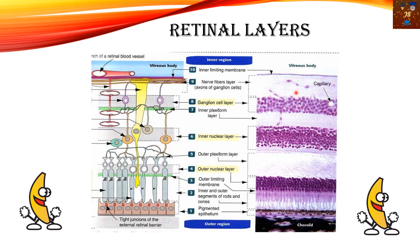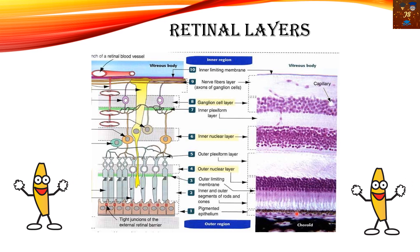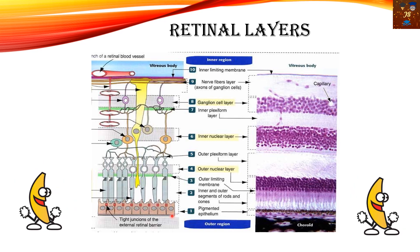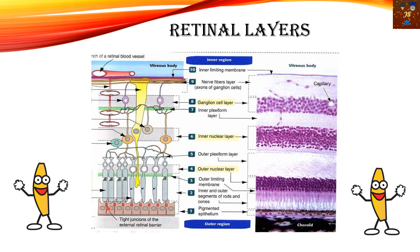This is the retinal layer — a very important layer of the eye. From the outermost to innermost region: the first layer is the pigmented epithelium, with tight junctions forming the external retinal barrier. The second layer is the inner and outer segments of rods and cones — the most important layer, as without these photoreceptors we cannot see. Third is the outer limiting membrane, which limits the layer of rods and cones. Then comes the outer nuclear layer and the outer plexiform layer.